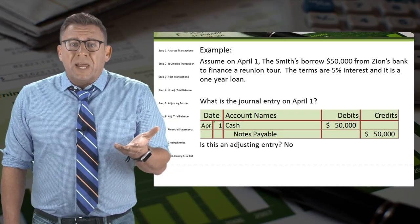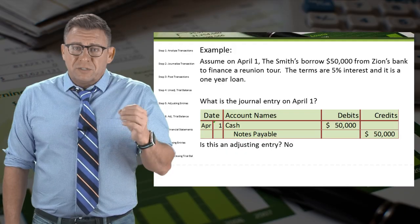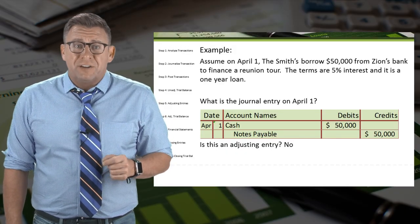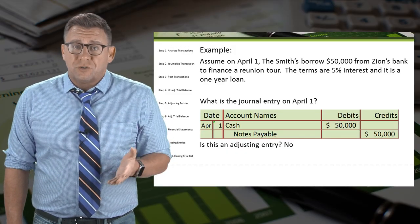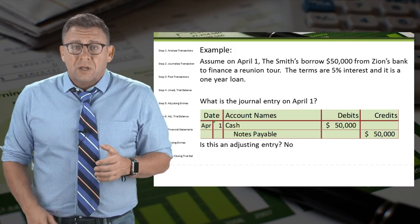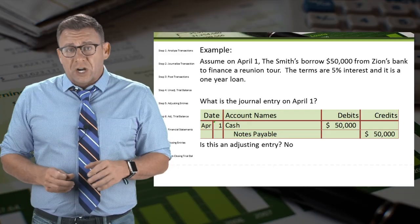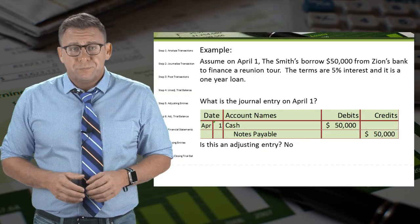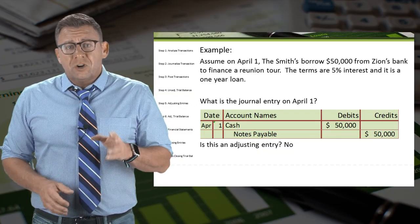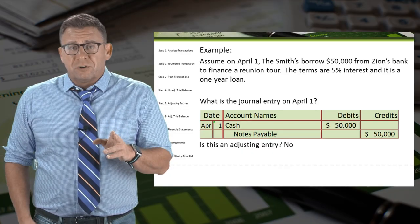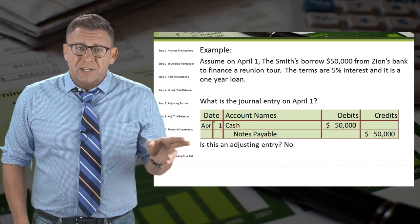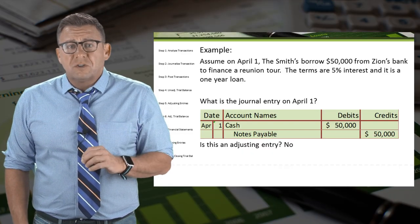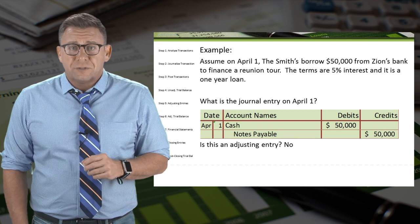Assume on April 1, the Smiths borrow $50,000 from Zions Bank to finance a reunion tour. The terms are 5% interest and it's a one-year loan. The journal entry on April 1 is a debit to cash and a credit to notes payable for $50,000.